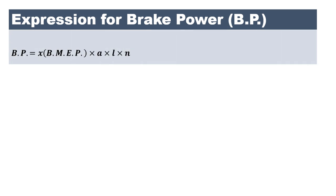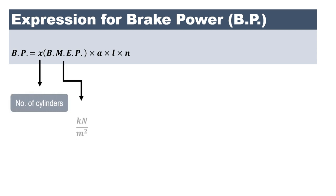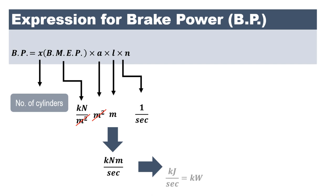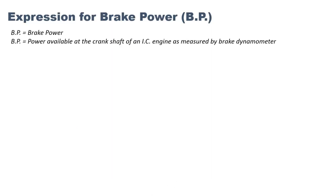Another expression is for brake power. A similar expression is used but instead of IMEP we use BMEP — brake mean effective pressure. The rest of the derivation is exactly the same. As you can see, meter square cancels out, giving kiloNewton·meter per second, which is kilojoule per second, or kilowatt.